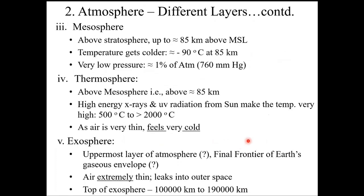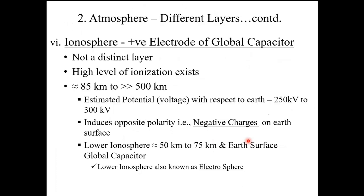From the lightning point of view, what is of interest to us is what we call the ionosphere. The ionosphere is a very important parameter in the phenomena of lightning, particularly the lower ionosphere. The ionosphere is the positive electrode of the global capacitor. It extends from approximately 85 kilometres above Earth to approximately 500 kilometres. The estimated electrical potential with respect to Earth is 250,000 volts to approximately 300,000 volts — that means 250 to 300 kilovolts.